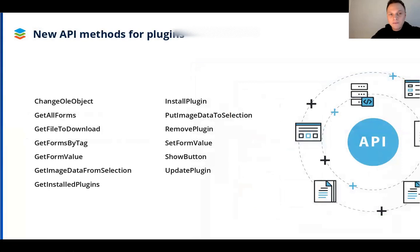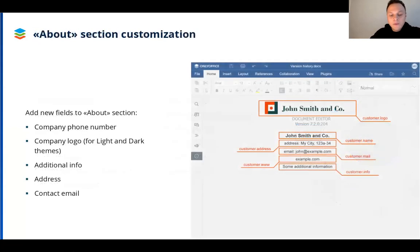We also introduced a number of new important API methods for plugins to support these new features. There's also more to customization: you can edit the About section in the editors to display an extended version of company info and specify a company phone, logo versions for dark and light interface themes, the address, the email, and any additional information you want to add.